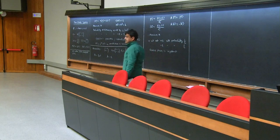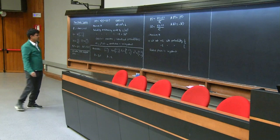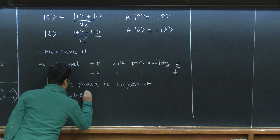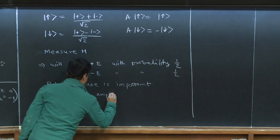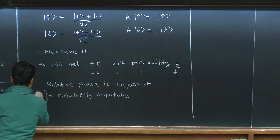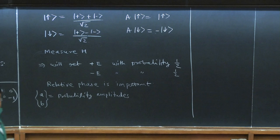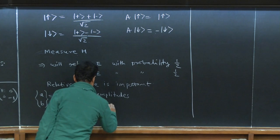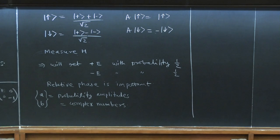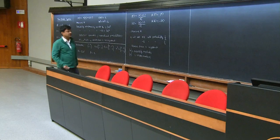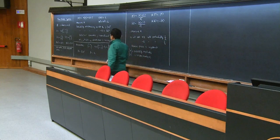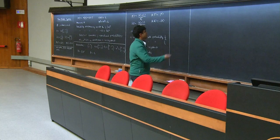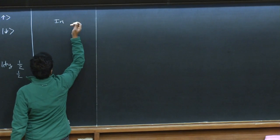There are two really weird things about quantum mechanics one must appreciate. First, a and b are called probability amplitudes — they are not probabilities. They are complex numbers. The entire Hilbert space structure is linear at the level of the states and not at the level of the norm. In quantum mechanics, you add probability amplitudes.